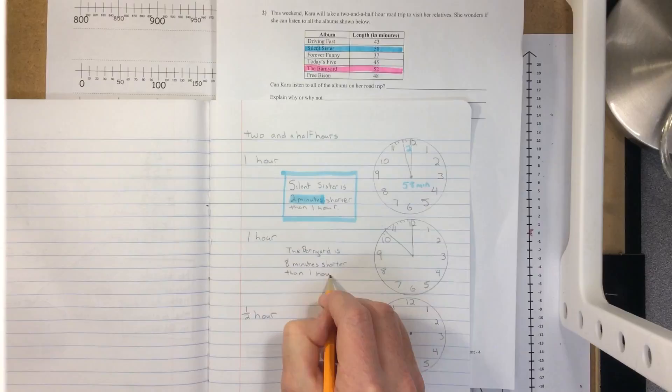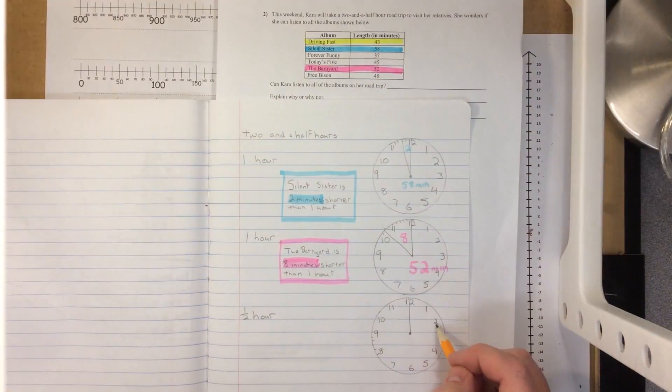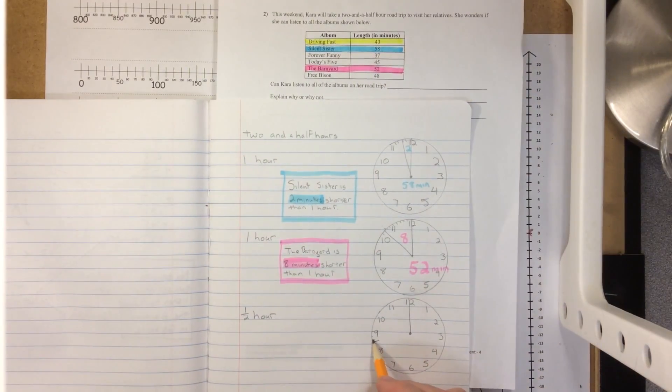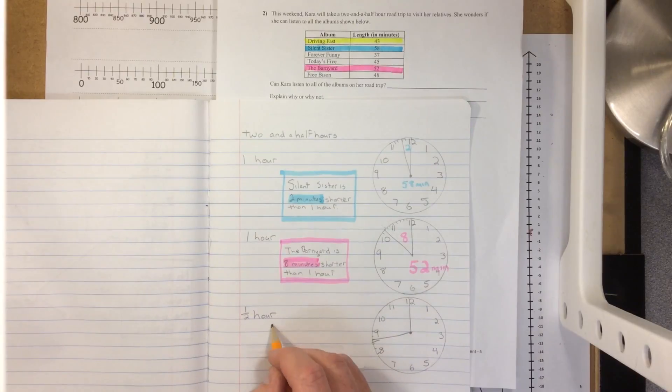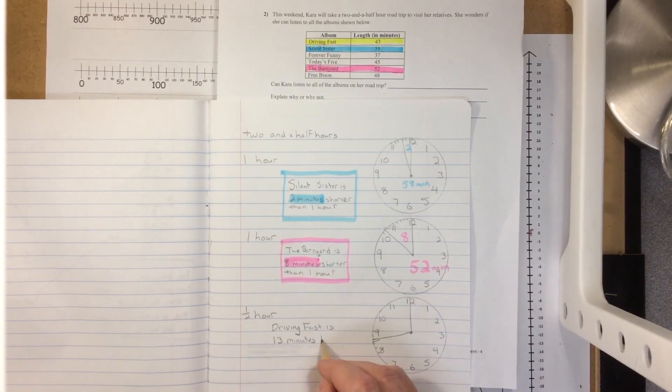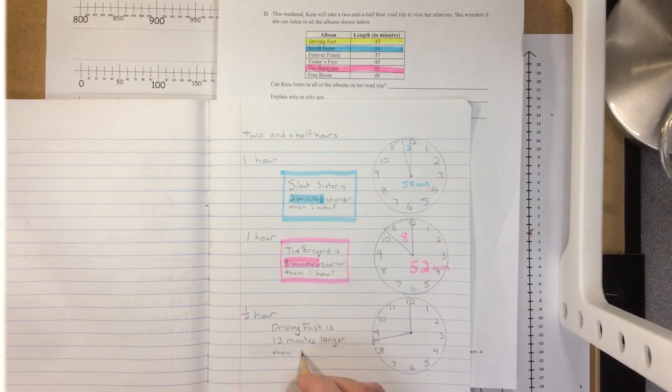And then we could look at the half hour and compare Driving Fast to one half hour. So a half hour is 30 minutes, Driving Fast is 43 minutes. So it's actually 13 minutes longer.